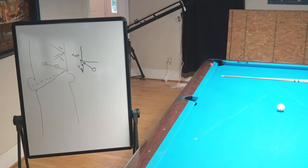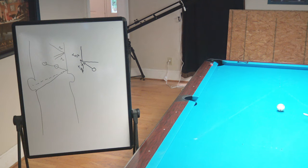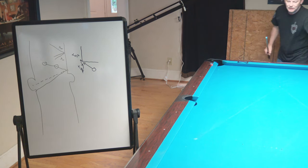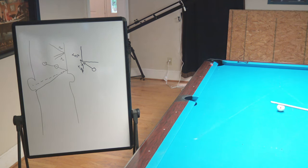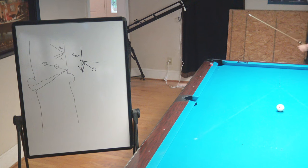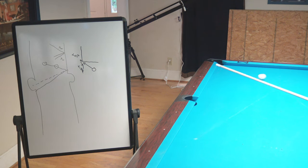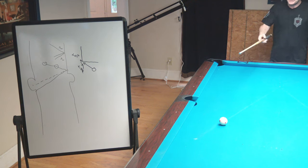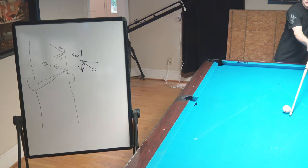If I shoot through here with no English aimed at the second diamond, we can see where it hits. Now if I put inside English on it and hit it soft, it's just a little bit of a shorter angle — it comes out maybe a couple inches down. Same shot, but hitting it hard causes the rail to compress, and now I can do some pretty cool stuff. See how far over that came? That was way out — just by hitting it harder. Same shot, same English, same everything, but I hit it hard. The harder you hit it, the further out it comes.